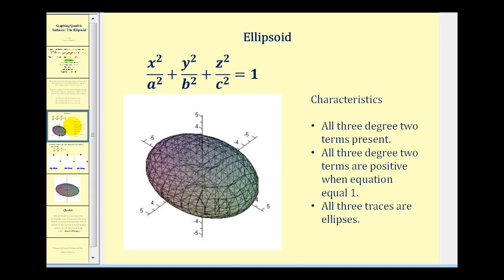So here's the form for an ellipsoid. Notice all three squared terms are present. They're all positive when the equation is equal to one. So we're going to take a look at an example where we determine each of the three traces.